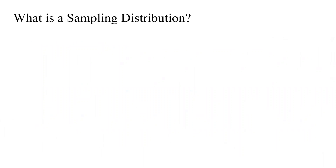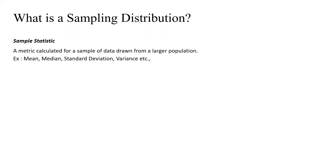Before diving into sampling distribution, let's recollect some basic known concepts and terms. First is sample statistic. We all know what a sample is and what a statistic is - mean, median, mode, standard deviations. If those metrics refer to a sample dataset we call them statistics; if they refer to a population we call them parameters.